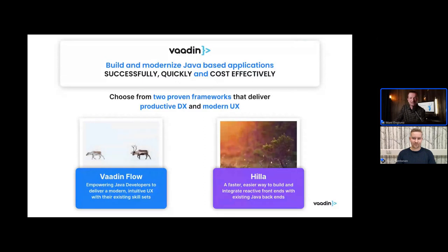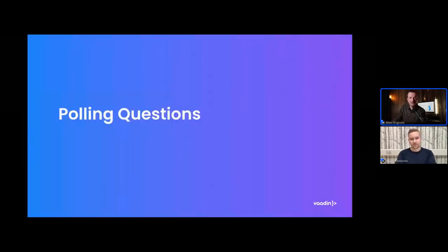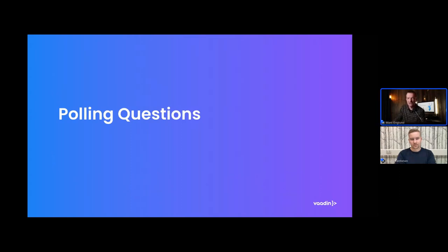Before we let Juuso loose, we're going to do a few polls to see who you are. We have four short questions that will pop up on your screen. When you submit your answer, you will be able to see live how each option is doing. The first question is: how do you describe the UX of the apps you develop or work on? Options are: great, good, okay, fair, needs work, or I don't know.